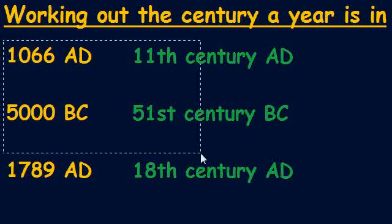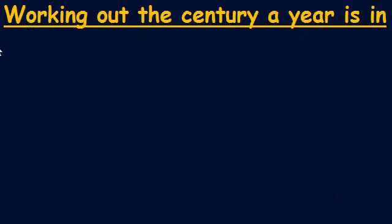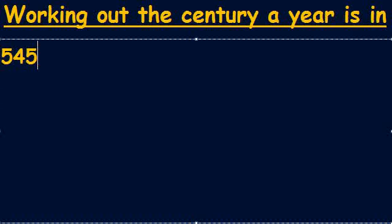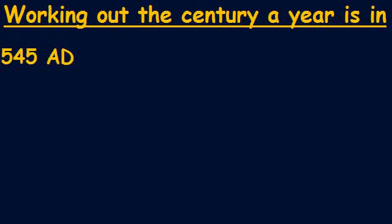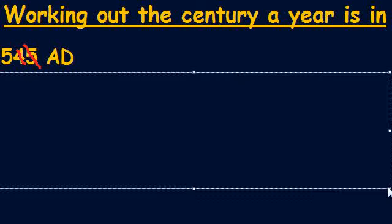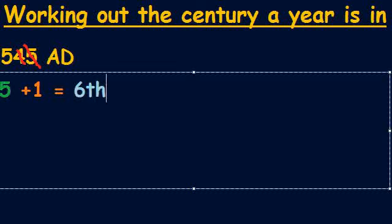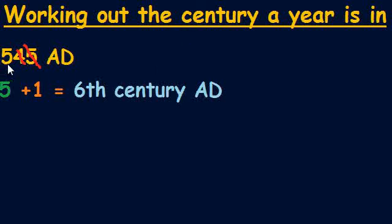Sometimes we might be given a year which only has three numbers in it. I'm going to use the year 545 AD. We do the same exact thing as before — cross off the last two numbers — except now we're only left with one number: the 5. We take that 5 and add 1 to it, and that tells us that 545 AD is in the 6th century AD. All we've done is cross off the last two numbers, take the one number that's there, and add 1 to it.